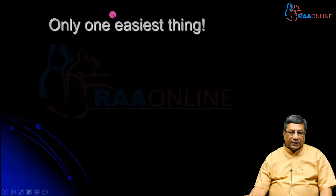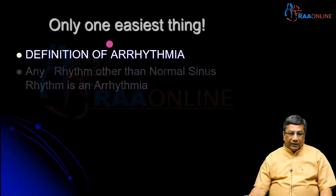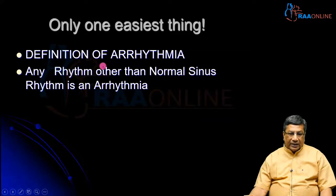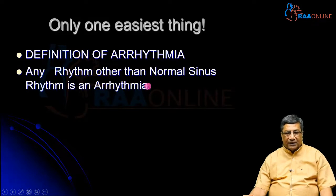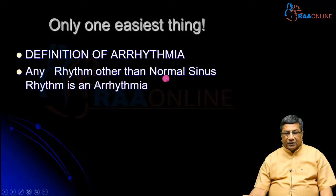There is only one easy thing about arrhythmia — everything else is complicated. That one easy thing is the definition: any rhythm other than normal sinus rhythm is an arrhythmia. That's why it is called arrhythmia. Therefore, it is very important to know how to recognize a normal sinus rhythm on the ECG before you can diagnose an arrhythmia.